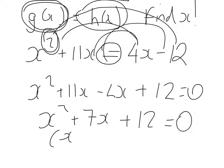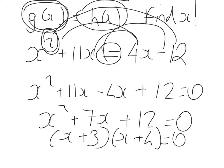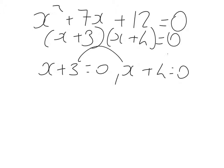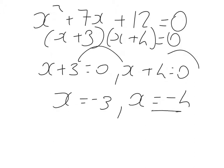Two numbers that multiply together to give 12 and add together to give 7 — that's 3 and 4. So that's x plus 3 bracket x plus 4. So x plus 3 is equal to 0, or x plus 4 is equal to 0. x is minus 3, x is equal to minus 4.